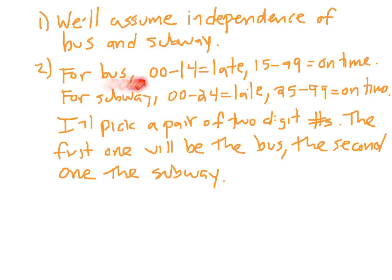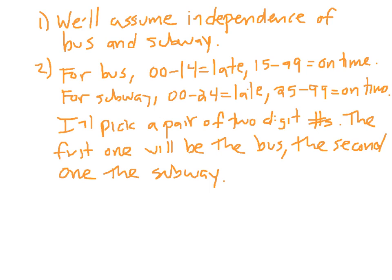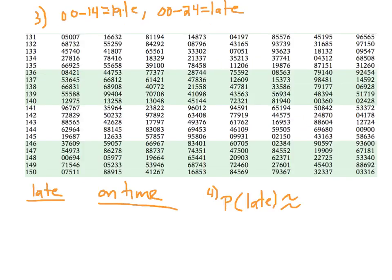I've listed all the outcomes. For the bus: 00 through 14 means the bus is late, and 15 through 99 means the bus is on time. For the subway: 00 through 24 means the subway is late, and 25 through 99 means the subway is on time. Notice the trick of starting at 00, so I get all 100 possibilities from 00 to 99. If I started at 01, this number would be 100, pushing into three digits. I'll pick a pair of two-digit numbers — the first represents the bus, the second represents the subway.